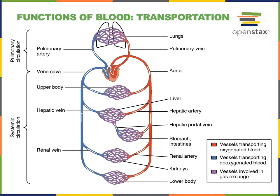Transportation is a major function of blood and the cardiovascular system. For example, oxygen is carried by the blood from the lungs to cells throughout the body in order to support aerobic cellular respiration. And then the waste product carbon dioxide is transported in the blood to the lungs in order to remove that carbon dioxide from the body.